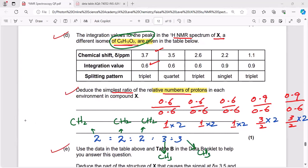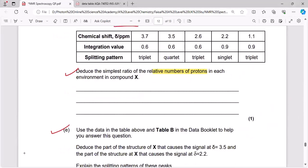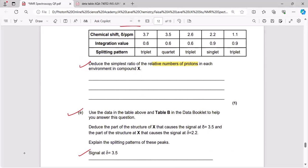This question has multiple parts. Let's try the remaining parts as well. Use the data in the table above and Table B in the Data Booklet to help you answer the question. Deduce the part of the structure that caused the signal at chemical shift 3.5 and the part of the structure that caused the signal at chemical shift 2.2.